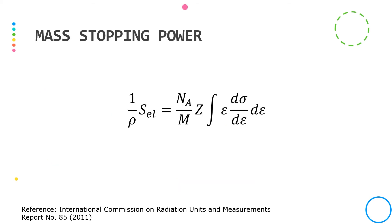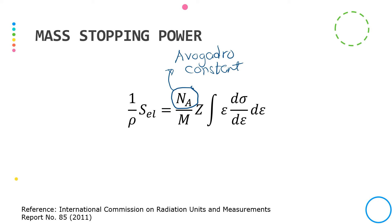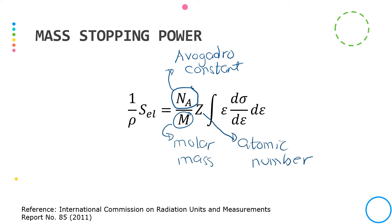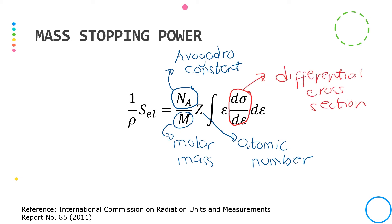All three terms of mass stopping power can be expressed in terms of cross-section. The mass electronic stopping power for an atom is expressed in terms of Avogadro's number, the molar mass, the atomic number Z, and the differential cross-section.